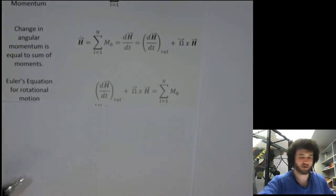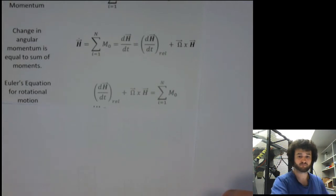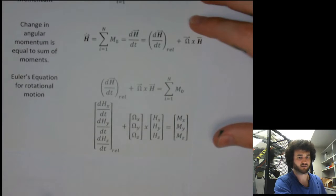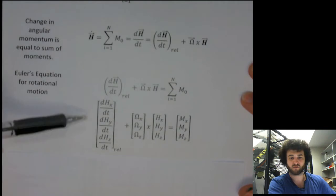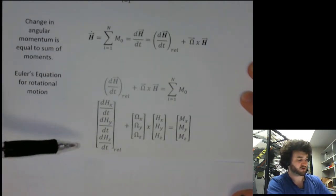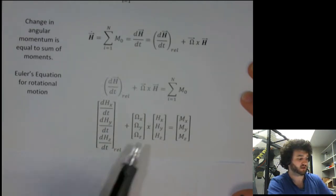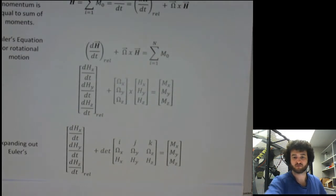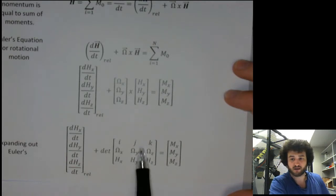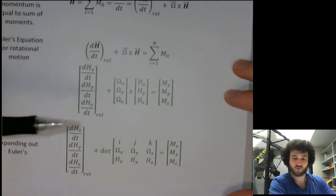Investigating each of these terms a little closer: in a three-dimensional coordinate frame, moments and angular velocity can all act in three dimensions, so each of these terms is a three-dimensional vector. Expanding out the derivative term, we have three components of the time derivative of angular momentum with respect to the rotating coordinate frame, plus the cross product of the angular velocity of the coordinate frame and the angular momentum, equal to the moments acting in that direction. I've written the cross product in terms of a matrix whose first row is the unit vectors, the second row is the first term in the cross product, and the third row is the second term.